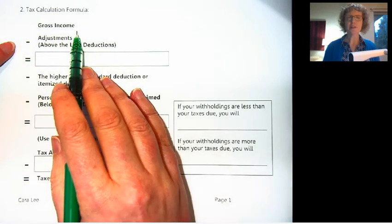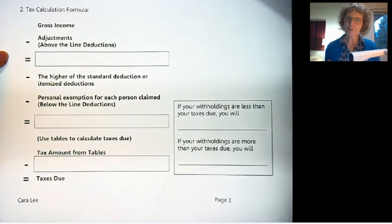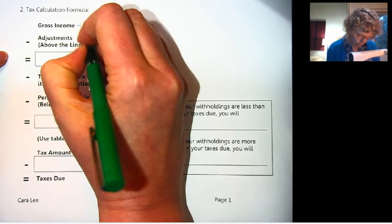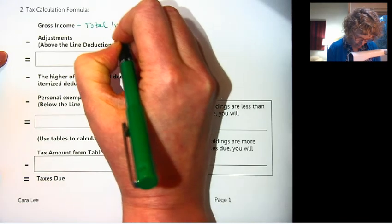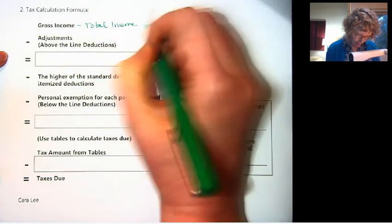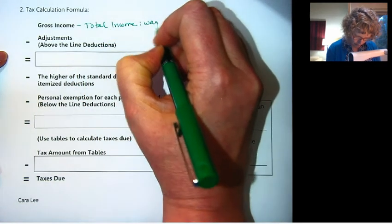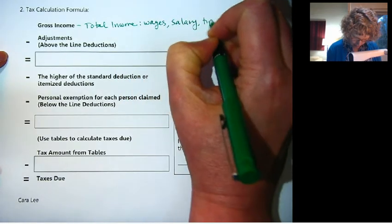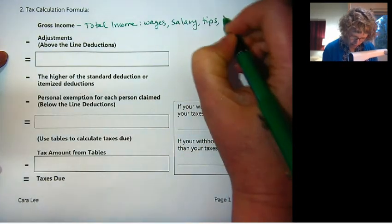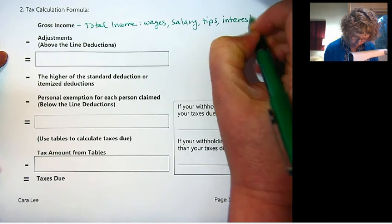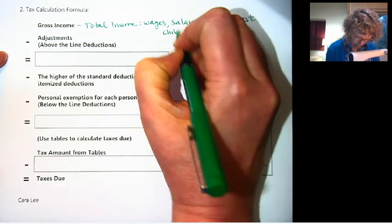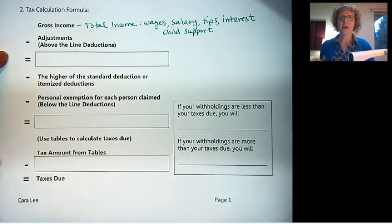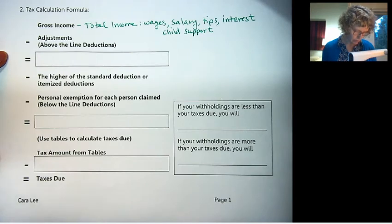So gross income. The first thing you start with is all of your income that you have earned through the year. So this is your total income, and that's from all sources like wages or salary, tips, interest on any bank accounts, and also includes child support. Any income that you have adds up to your gross income.